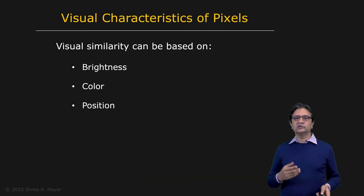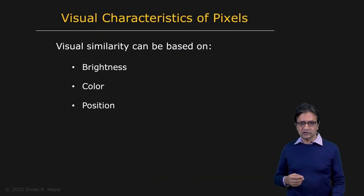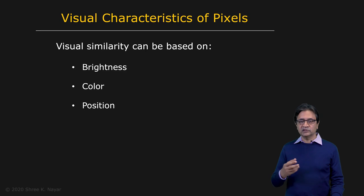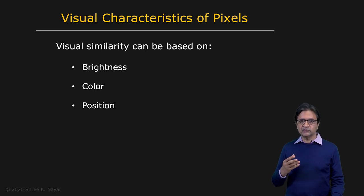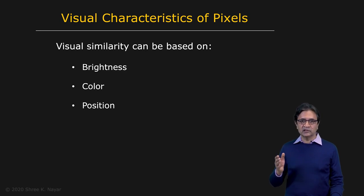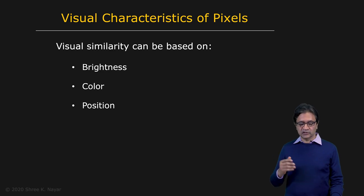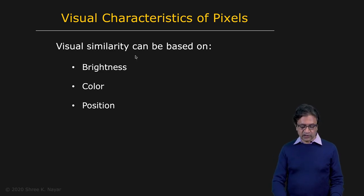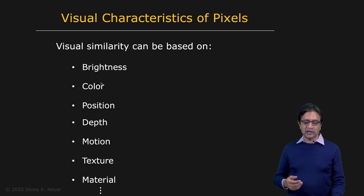Let's take a look at some of the visual characteristics that we can compute or measure at a pixel. In terms of measurements, we have brightness, we have color — perhaps three channels: red, green, and blue — and we have position, which would be x, y. These are all direct measurements at a pixel.